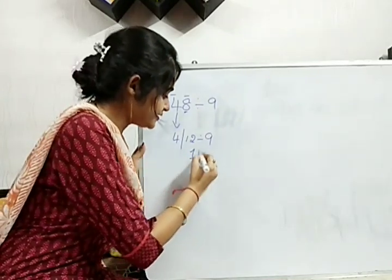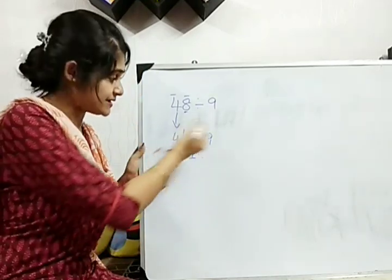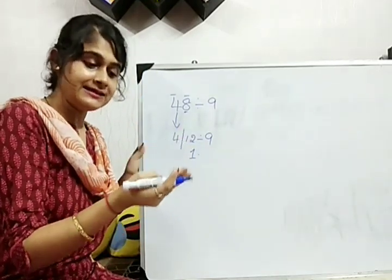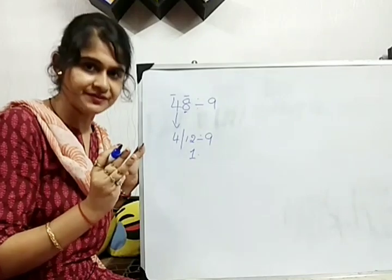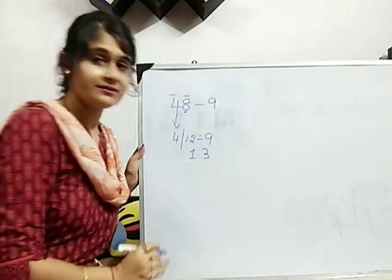So when it goes one time, we write here 1. Then, we give the decimal. Now, after 9, how many times it is going? 9, 10, 11, 12. Means, 3 we get. Remainder we get as 3. We write here 3. This is not the end.